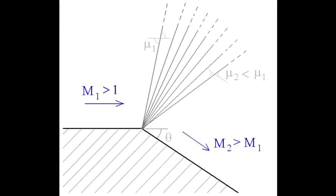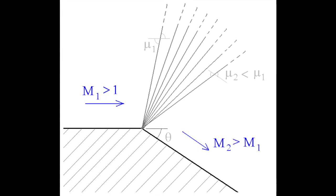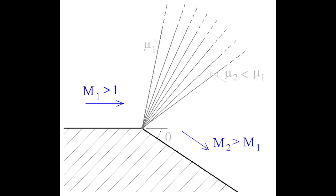Across the expansion wave, the Mach number increases and the pressure, temperature, density decreases.